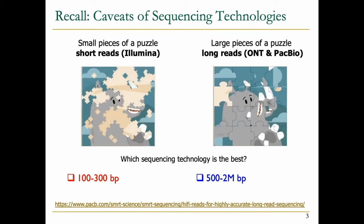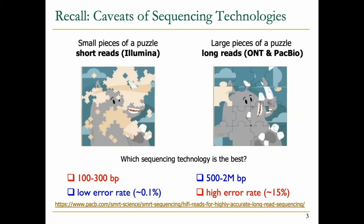Third-generation sequencing technologies are more advantageous in read length, but second-generation technologies produce reads with a very low error rate around 0.1%, while third-generation technologies produce reads with a high error rate around 10 to 15%. There are recent approaches such as CCS reads, which find the consensus between circular reads to produce more accurate long reads. Nowadays we're starting to see very long and accurate reads.